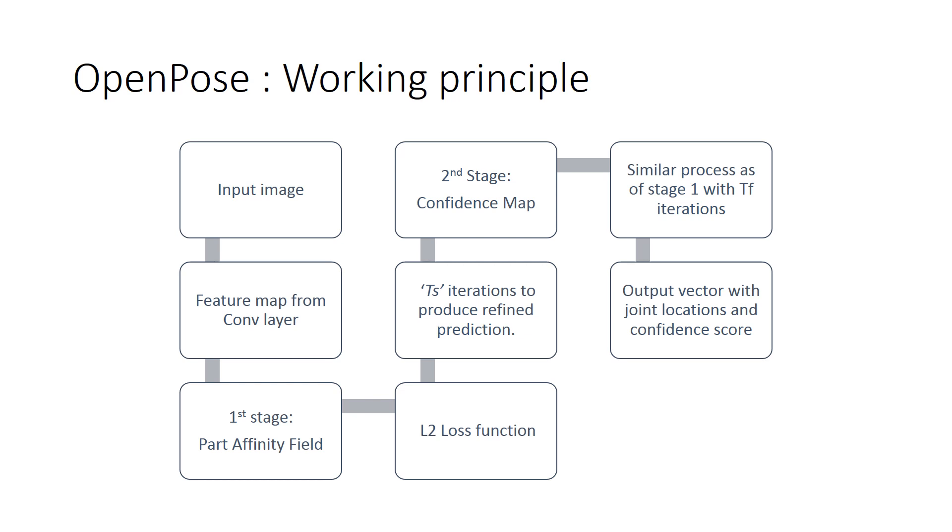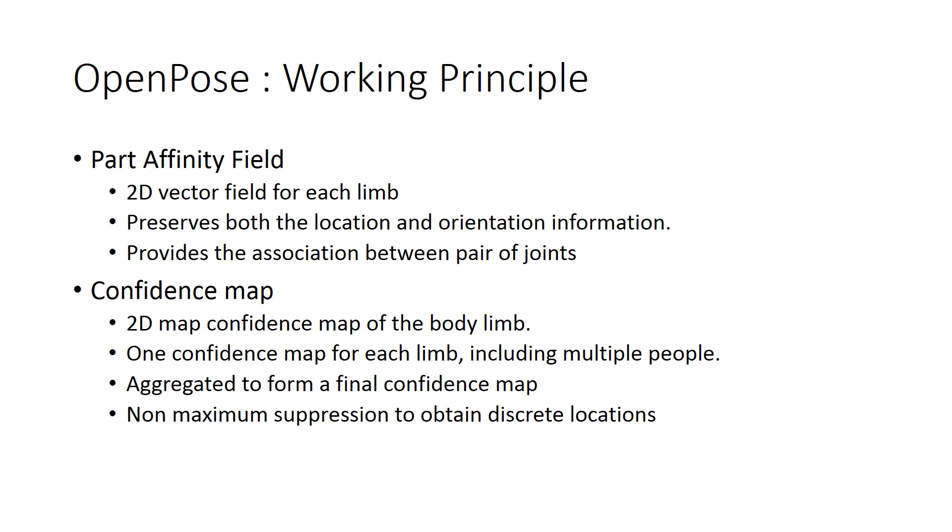The final map is the aggregation of individual confidence maps after non-maxima suppression to obtain single discrete points for each node. Again, an L2 function is used to guide the network. Since not all the training images are labeled, to face the issue with missing annotation, a binary weight is multiplied with the loss function.